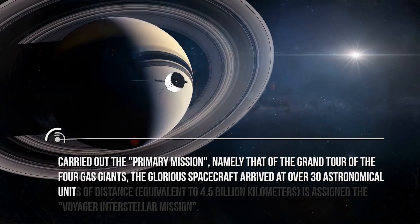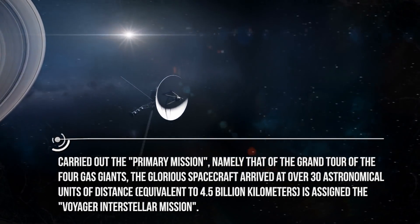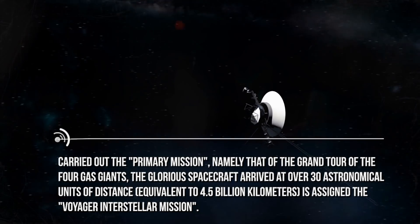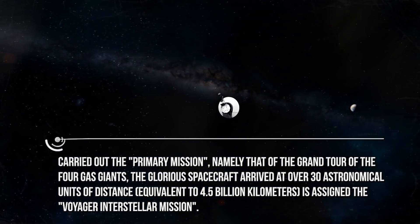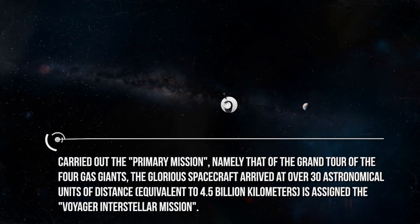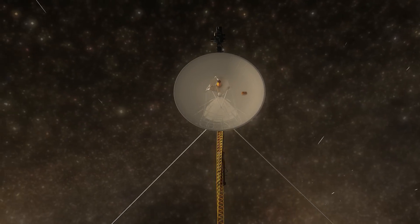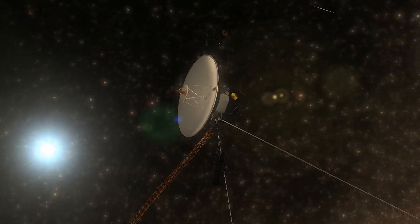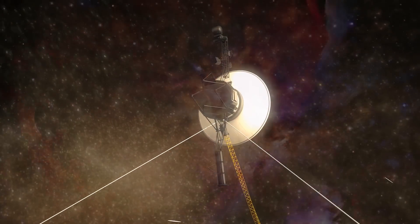Carried out the primary mission, namely that of the grand tour of the four gas giants, the glorious spacecraft arrived at over 30 astronomical units of distance, equivalent to 4.5 billion kilometers, is assigned the Voyager interstellar mission. The purpose? To extend the exploration of the solar system to the outer limits of the magnetic sphere of influence of the Sun, and possibly beyond.